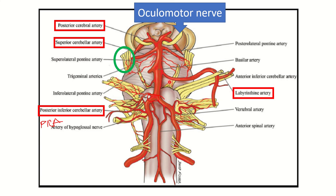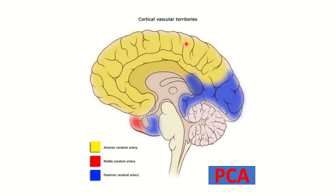Another important relation: the labyrinthine artery, a branch of the basilar artery, accompanies two important nerves — the vestibulocochlear nerve and the facial nerve. In summary, the basilar artery is formed by two vertebral arteries, terminates into the posterior cerebral arteries, and gives branches including the posterior inferior cerebellar artery, labyrinthine artery, superior cerebellar artery, and pontile arteries.